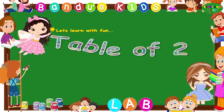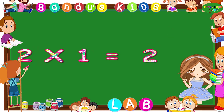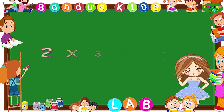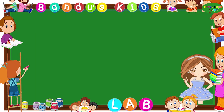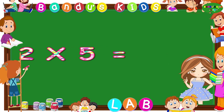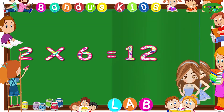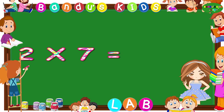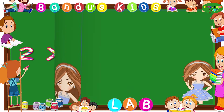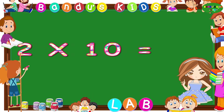The table of two. Two ones are two. Two twos are four. Two threes are six. Two fours are eight. Two fives are ten. Two sixes are twelve. Two sevens are fourteen. Two eights are sixteen. Two nines are eighteen. Two tens are twenty.